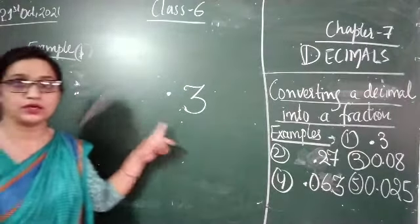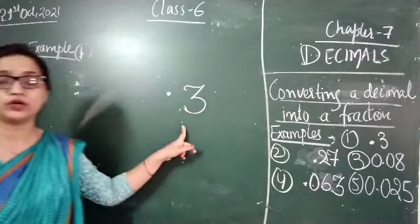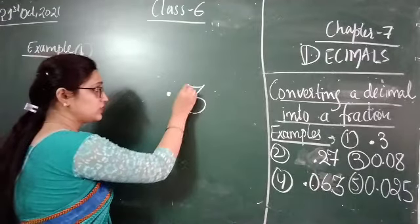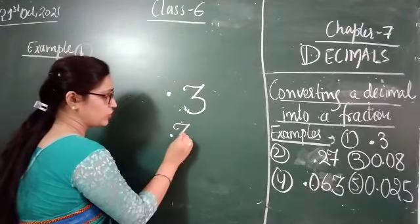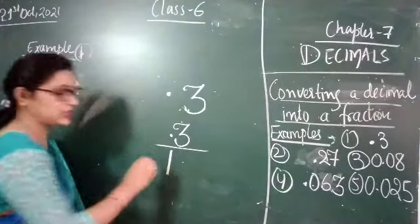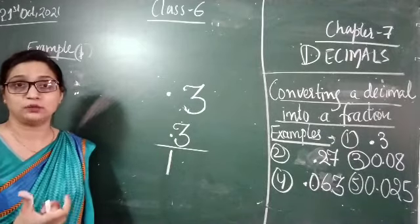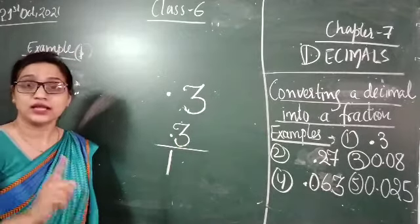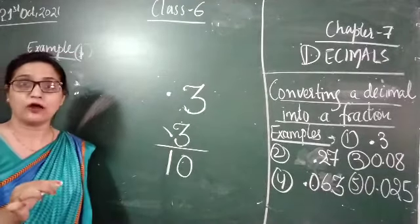Let us see. The first one is 0.3. This number is given in the form of a decimal; we have to convert this decimal into fractional form. The first step is to write this number in place of the numerator, and then in place of the denominator write 1 followed by zeros. The number of zeros depends on the place value at its decimal place — here there is only one decimal place, so we put 1 zero and remove the decimal point.